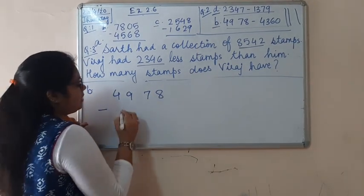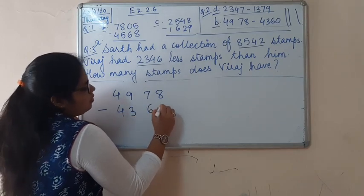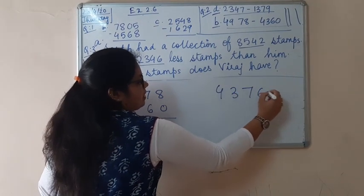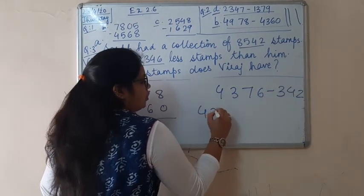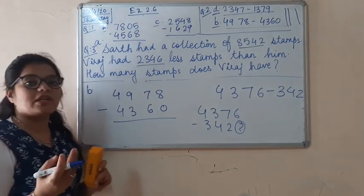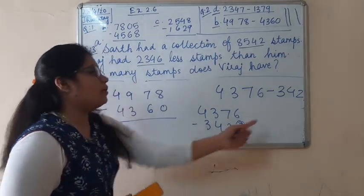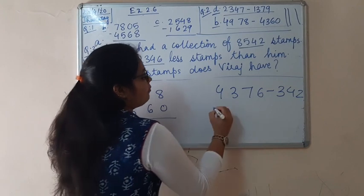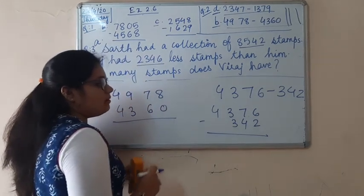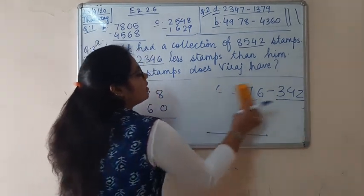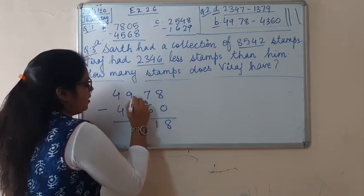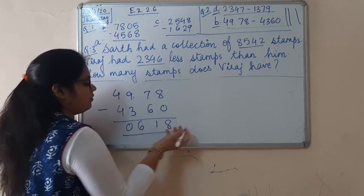When you are arranging numbers vertically, be very careful about number position. These are 4-digit numbers. Before subtraction, I want to give you an example: suppose it is 4,376 minus 342. You cannot add a zero to make it 3,420 — you are given 342. Arrange from the right side if you are unsure; count the number of digits and arrange from ones, tens, and hundreds. 8 minus 0 is 8. 7 minus 6 is 1. 9 minus 3 is 6. 4 minus 4 is 0. It was very simple.